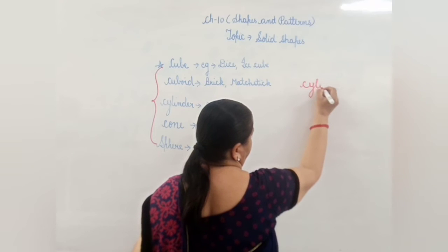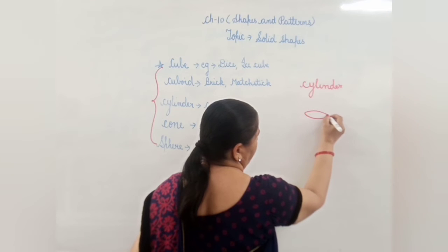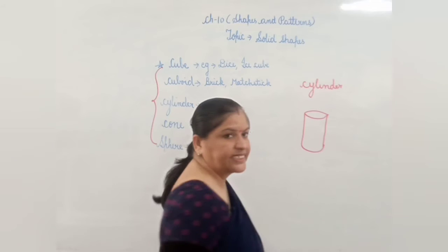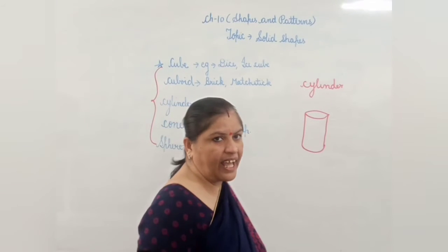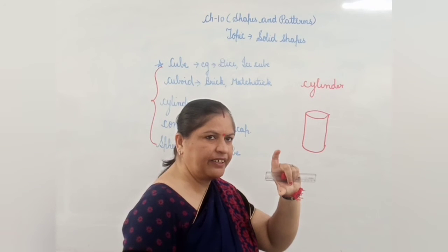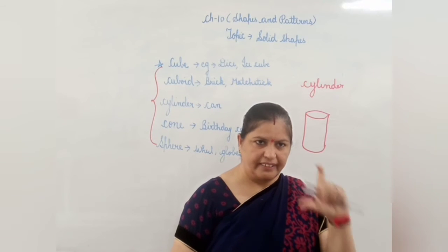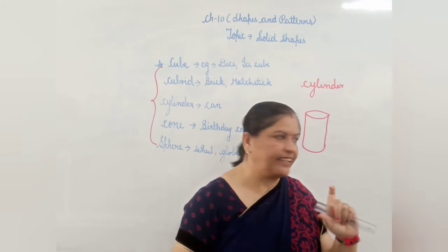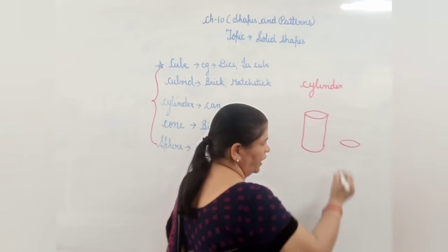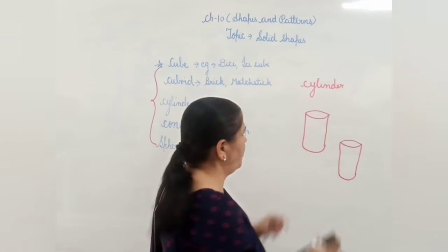That is cylinder. How will we make a cylinder? First we will make one oval, then we will make two inclined lines, and we will close it like this. This is a cylinder. What are the examples? A small can — like a Coca-Cola can — that is the shape of a cylinder. Also the cooking gas cylinder we use in the kitchen is also the shape of a cylinder. First make an oval, then two lines, and then join those two lines. This is the shape of a cylinder.